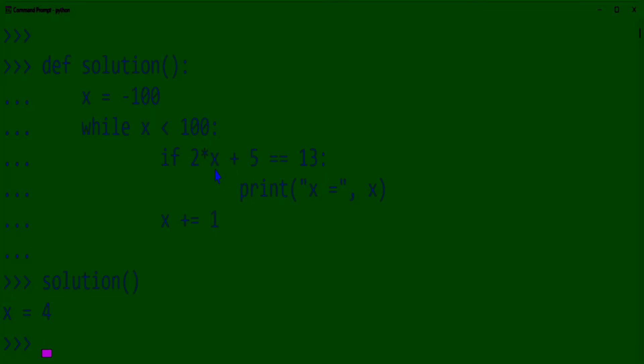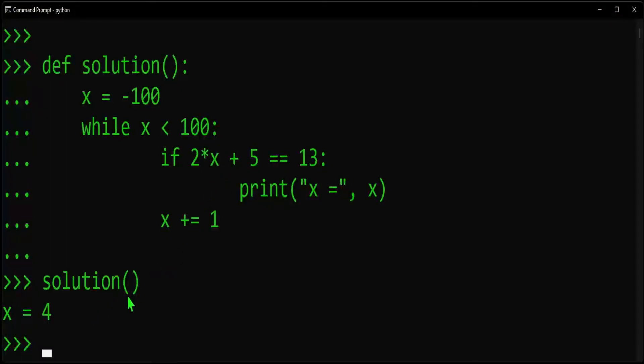Is 2 times 4, if we plug in this x value here to this equation, is 2 times 4 plus 5 equivalent to 13? Let's check it. 2 times 4 is 8 plus 5 is equal to 13. So it looks like we did pretty good there.